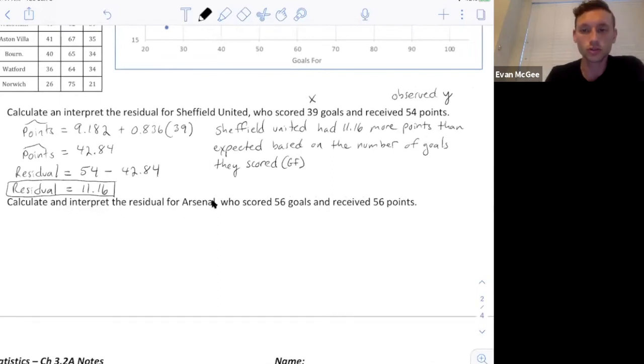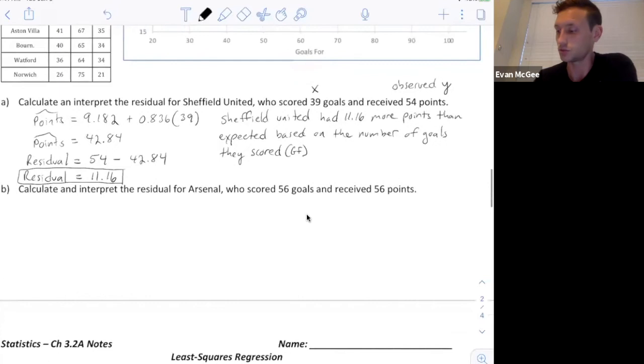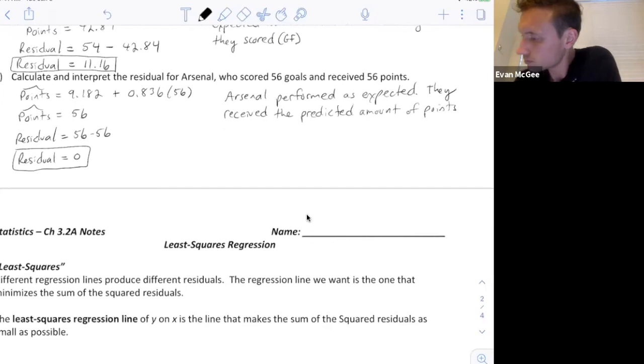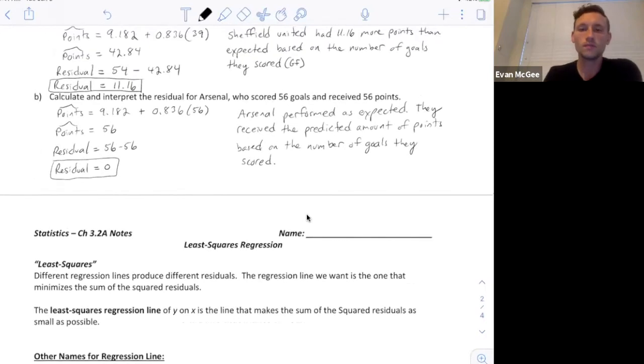Let's calculate and interpret the residual for Arsenal, who scored 56 goals and received 56 points. We'll do the same process and then interpret what their residual means. We plugged in their x value 56 and got an expected number of 56 points, which means their residual is zero because they scored 56 points. They actually performed as expected, they received the exact or they received the predicted amount of points based on the number of goals that they scored.